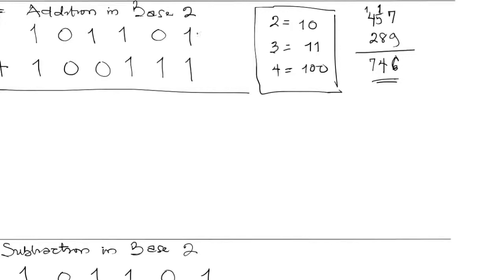We start from the right-hand side like we do for base 10, and we add 1 to 1, and that's 2. But because we're working in base 2, we cannot have 2 as our answer — the only numbers allowed in base 2 are 0 and 1. So instead of writing 2, we go to our reference. We know that 2 in base 2 is 10, so we write down 0 and carry the 1 over.